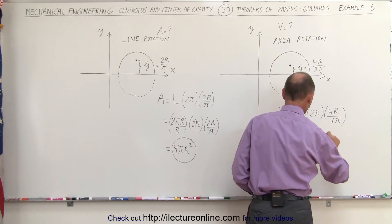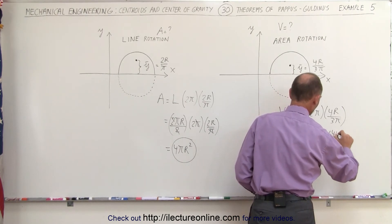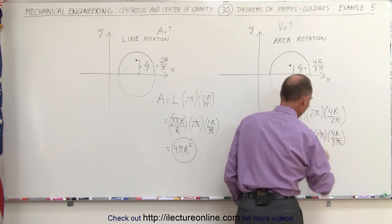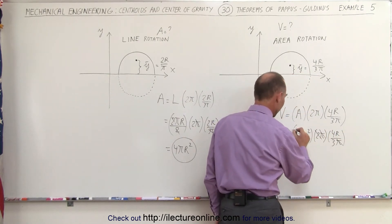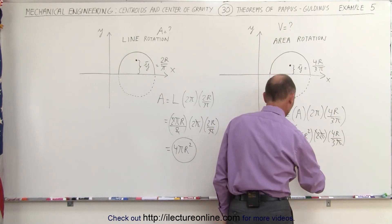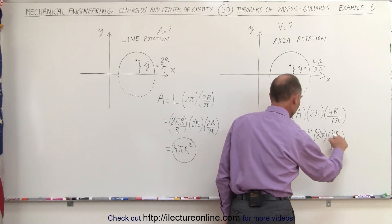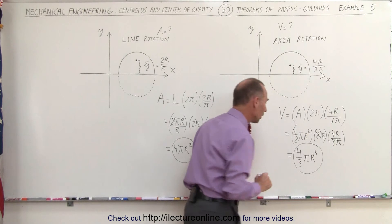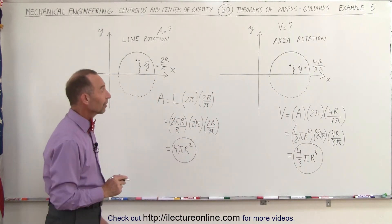Multiply that times 2π, multiply that times 4r divided by 3π. The π's here cancel out. The 2 and the 1/2 cancel out. We are left with 4/3 πr², times r makes it r³. And that is indeed the equation or the formula for the volume of a sphere.